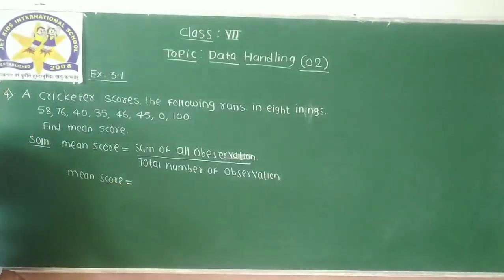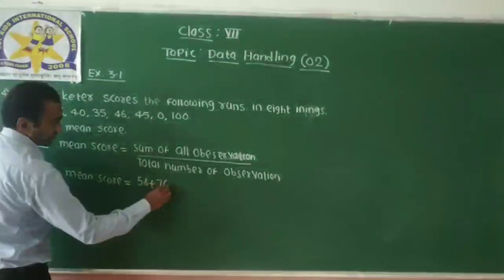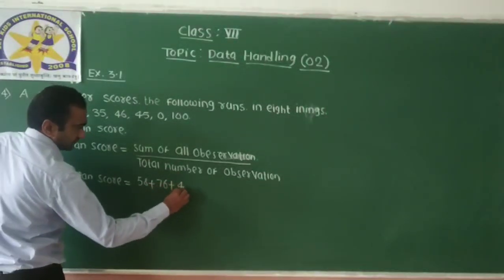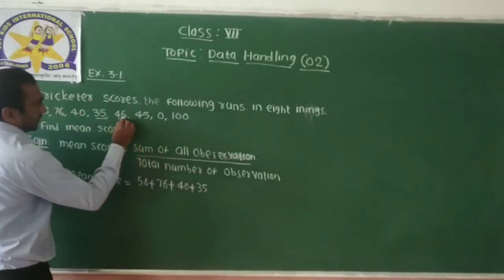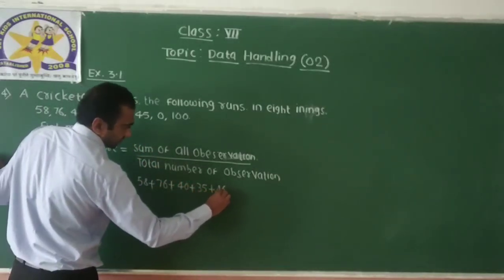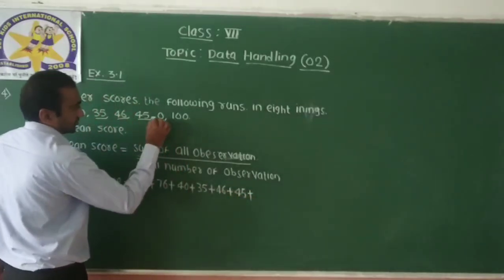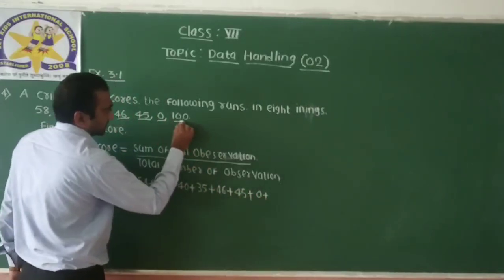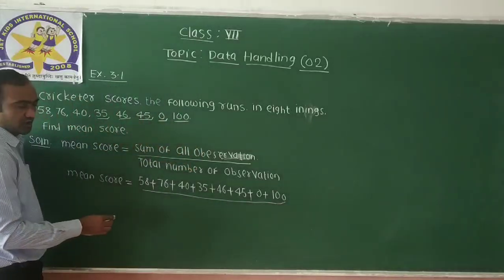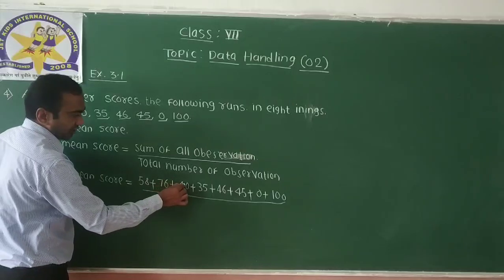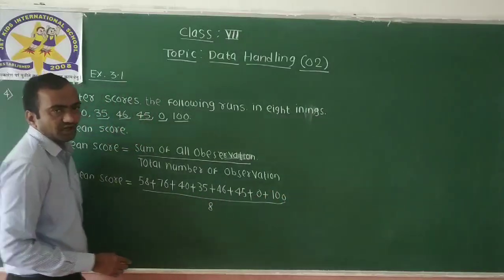Mean score A equals the sum of all observations: 58 plus 76 plus 40 plus 35 plus 46 plus 45 plus 0 plus 100, divided by the total number of observations. Counting: 1, 2, 3, 4, 5, 6, 7, 8 — total observations are 8.